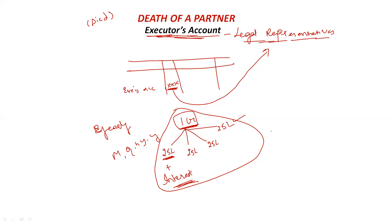If you remember the retirement of a partner chapter, in that we prepared the partner's loan account. It is the same thing — whatever balancing figure we got in the partner's capital account, we had to give that amount to the retiring partner, so we prepared the partner's loan account. The executor's account is exactly the same. Just the name is different: in case of retirement we call it partner's loan account, and in case of death we call it executors account.